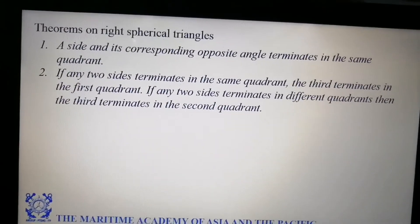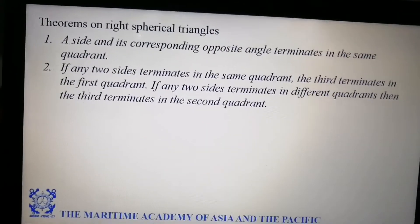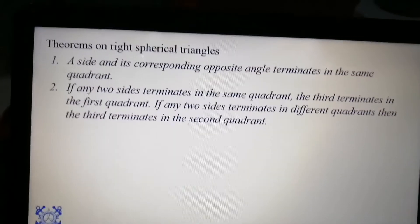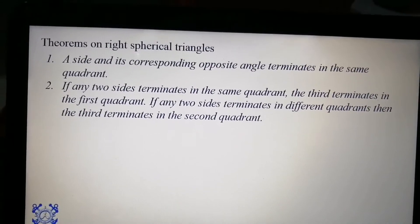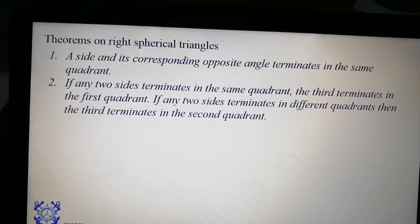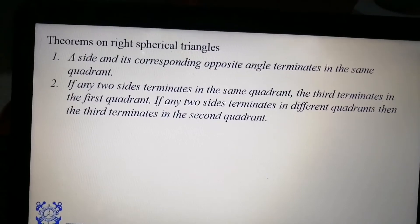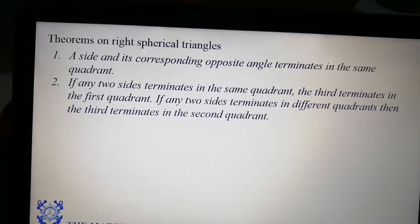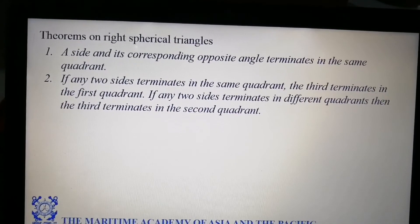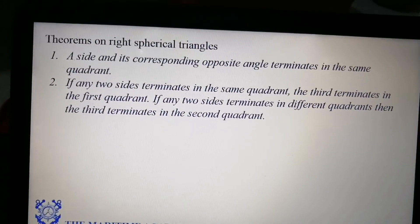If the two sides terminate in different quadrants — one acute and one obtuse — then the third side terminates in the second quadrant, meaning the third is obtuse. This tells us it is impossible for a right spherical triangle to have all three sides obtuse. If two sides are obtuse, the third must be acute. So the only possibilities are: all three sides acute, or exactly two sides obtuse and one acute.